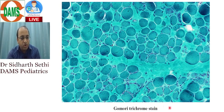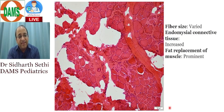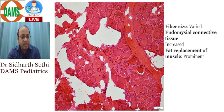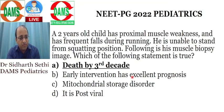In your exam they may show you a Gomori trichrome stain which enhances and shows the connective tissue within the muscle fibers. In the late phase of Duchenne's, you can see that fiber size is varied, endomysial connective tissue is increased with a lot of fibrosis, and the muscle fibers are replaced by fat — very few muscle fibers remain. That is why these children have pseudohypertrophy of the muscles.